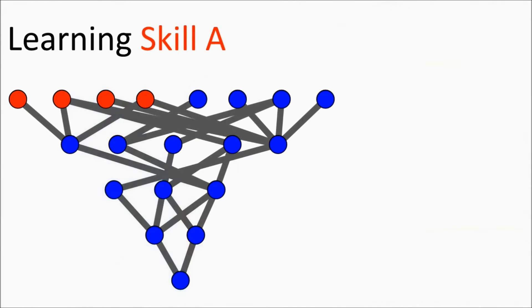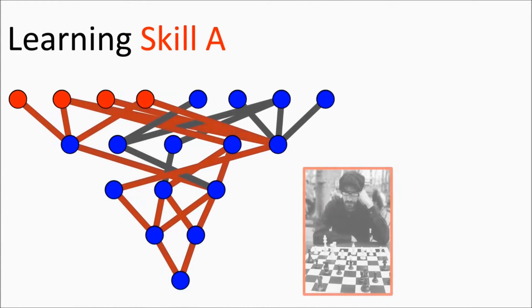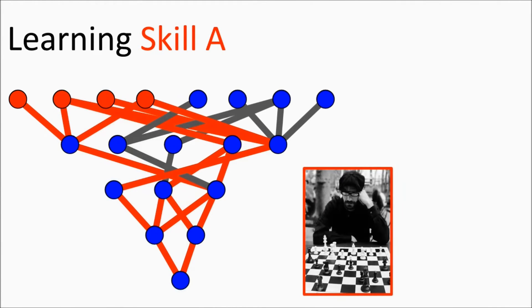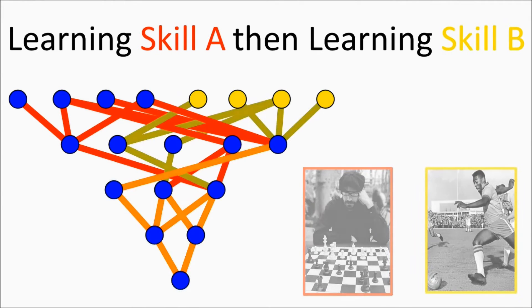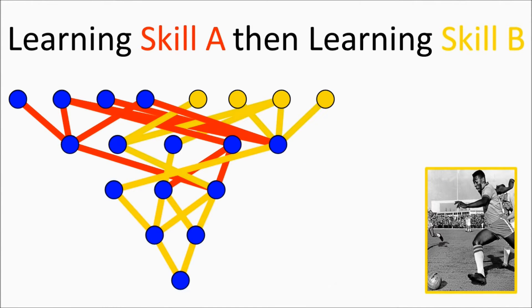Current computational brains, known as artificial neural networks, learn skills by changing their neural connections in response to experiences. Learning a new skill can lead to rapid forgetting of old skills, because the same connections that encode the old skill are reused to learn the new skill, thus erasing the previously acquired knowledge.